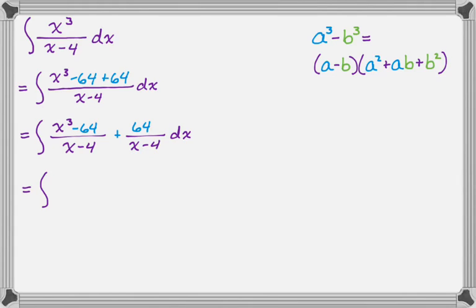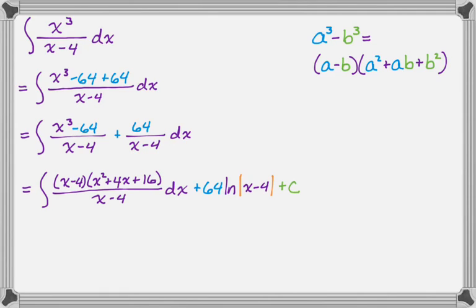So let's factor it. So we're going to have x minus four, and then the quantity x squared plus 4x, and then plus 16, all over x minus four. And then dx, and then I'm going to integrate the other part. So that's going to be plus 64, natural log, absolute value, x minus four, and then we're going to pick up a plus c there.